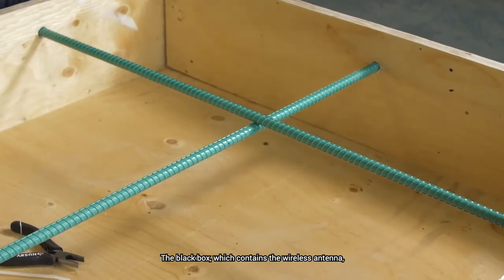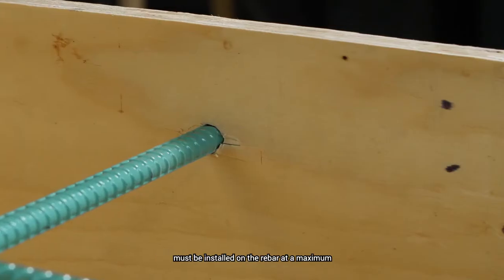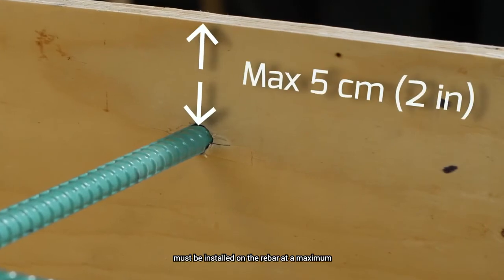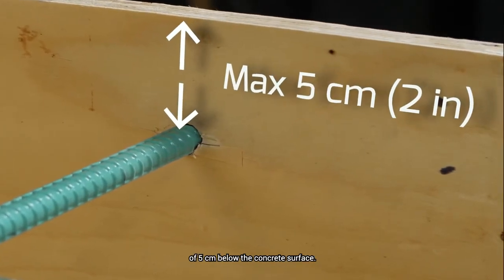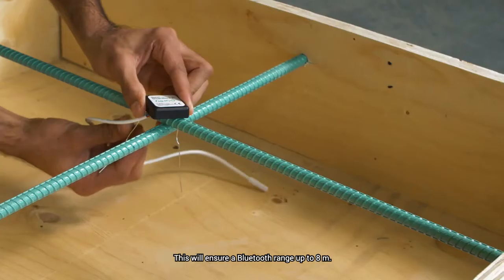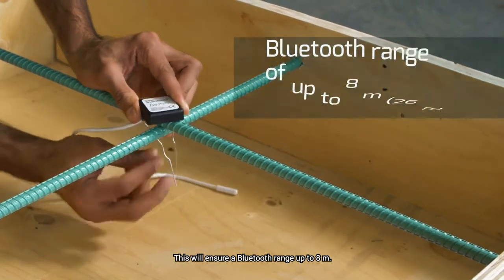The black box, which contains the wireless antenna, must be installed on the rebar at a maximum of five centimeters below the concrete surface. This will ensure a Bluetooth range up to eight meters.